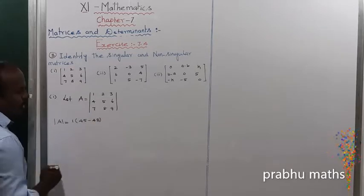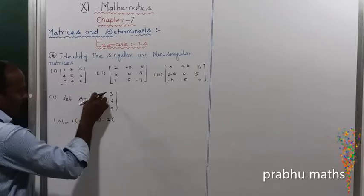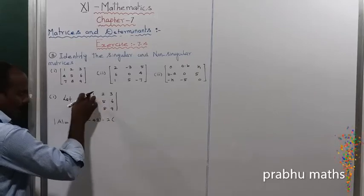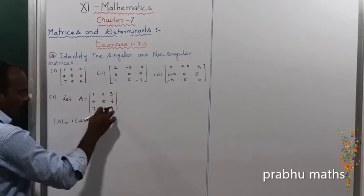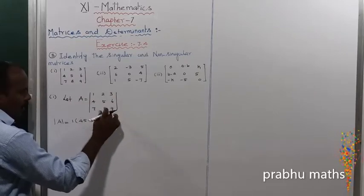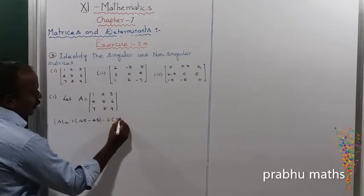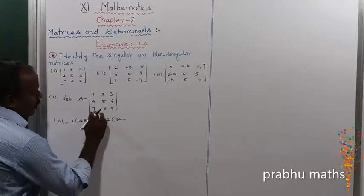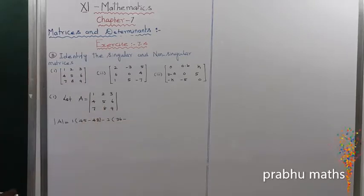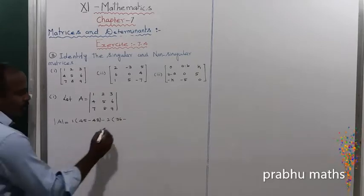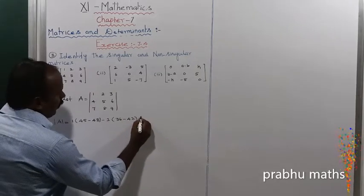The first term is completed. Next, minus 2 into the remaining submatrix. The product for the first diagonal is 36, and for the second diagonal, 6 times 7 gives 42. So the second term is minus 2 into (36 minus 42).